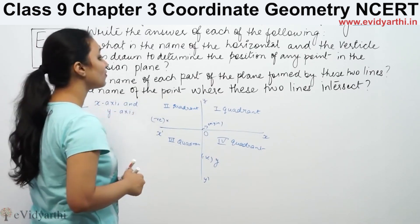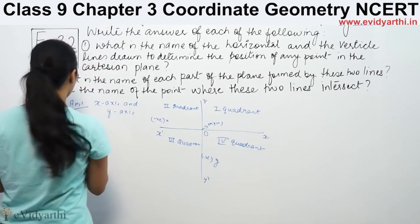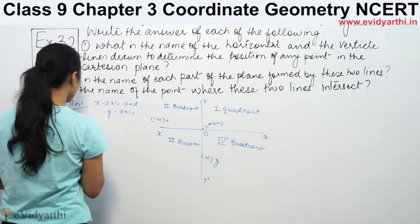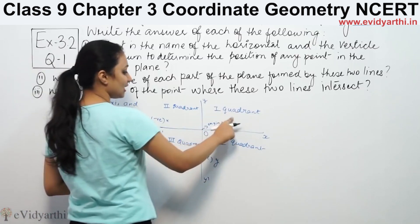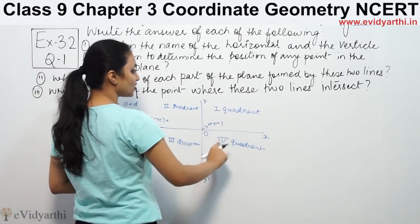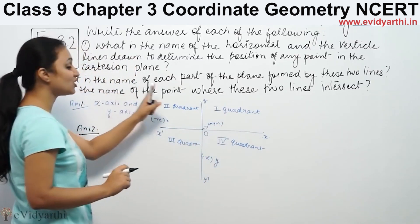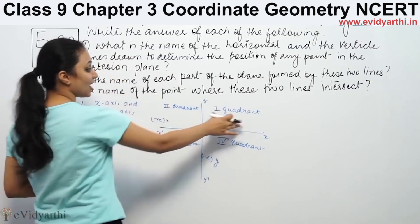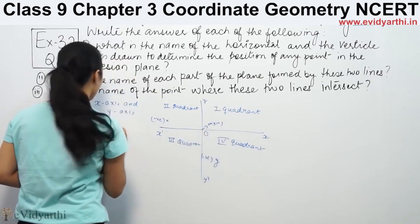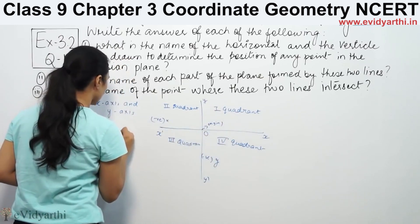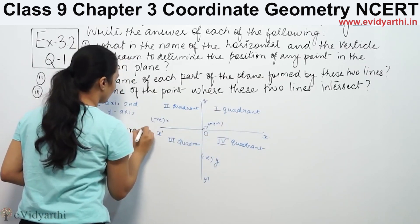What is the name of each part of the plane formed by the horizontal and vertical lines? These lines divide the plane into parts. The name of each part of the plane formed by these lines is quadrants.